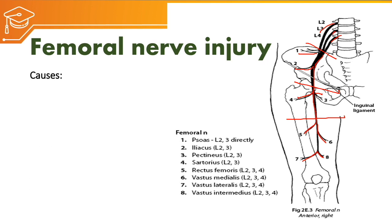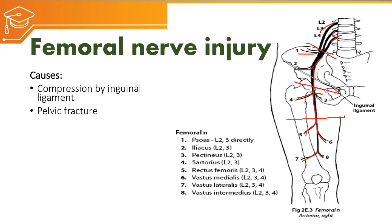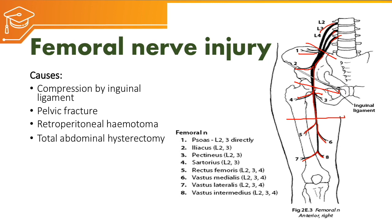The main causes for femoral nerve injury include: compression under the inguinal ligament as the nerve passes beneath it; trauma to the pelvic bone such as pelvic fracture; and retroperitoneal hematoma — a collection of blood posterior to the abdomen — which may cause compression. Total abdominal hysterectomy is another cause.